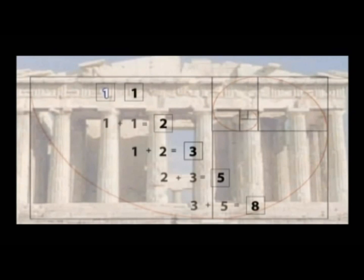So the sequence goes one, one, two, three, five, and so on. And for reasons that are pretty mysterious, this sequence of numbers seems to appear in a wide variety of places in the natural world.